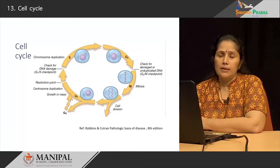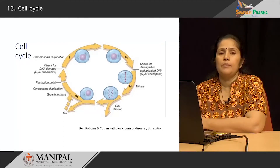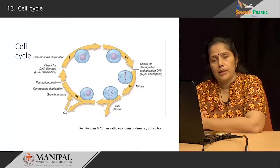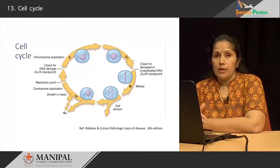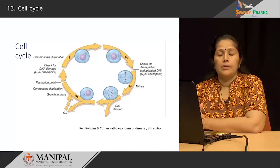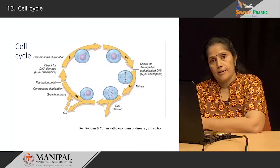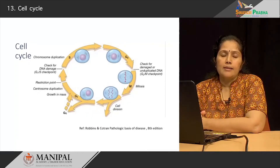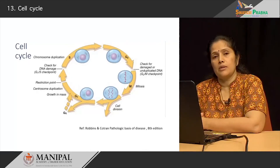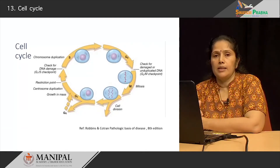Understanding the cell cycle and how it is regulated plays a very important part in understanding how cancers or neoplasms develop in our body. An understanding of cyclins and their role, the role of cyclin-dependent kinases, and the inhibitors of cyclin-dependent kinases and their function in the integrity of the genome is also essential in understanding how neoplasms occur within the human body.